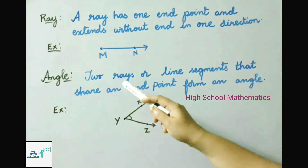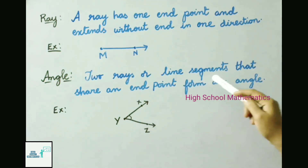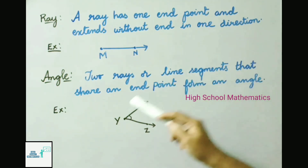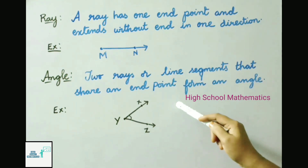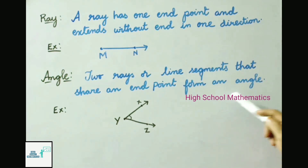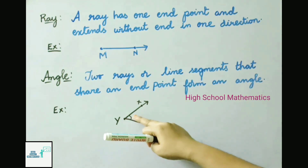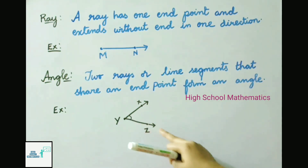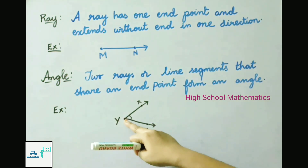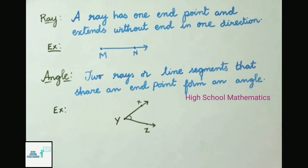An angle is formed when two rays or two line segments share an end point. In the example, two rays sharing one common end point form an angle called angle XYZ or angle ZYX.